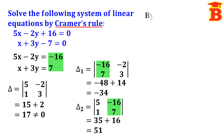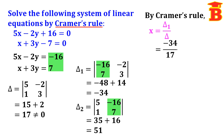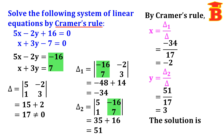Now we apply Cramer's Rule. The rule is x equals del 1 by del, that is minus 34 divided by 17, which equals minus 2. Similarly, y equals del 2 by del, that is 51 divided by 17, which equals 3. Therefore the solution is x equals minus 2 and y equals 3.